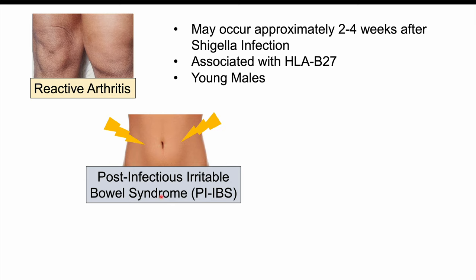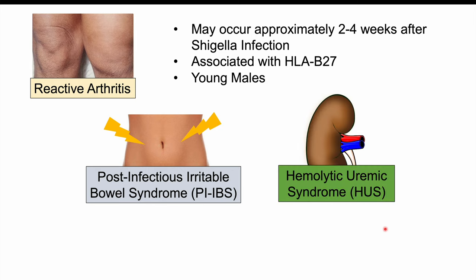A minority of patients, even after resolution of symptoms, can have persistent abdominal pain, diarrhea, or constipation — altering their bowel habits for a longer period of time. Some patients can also experience hemolytic uremic syndrome, or HUS.